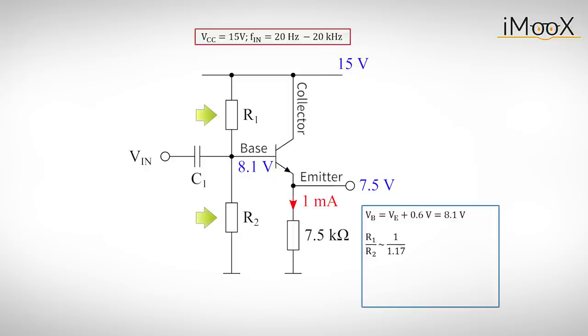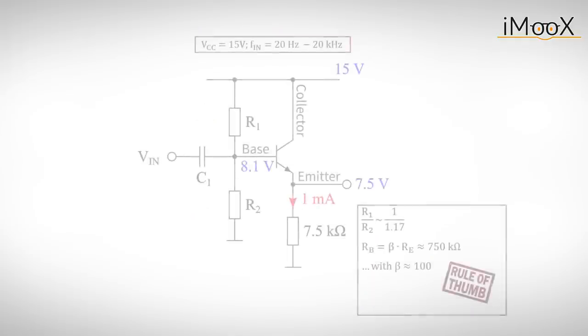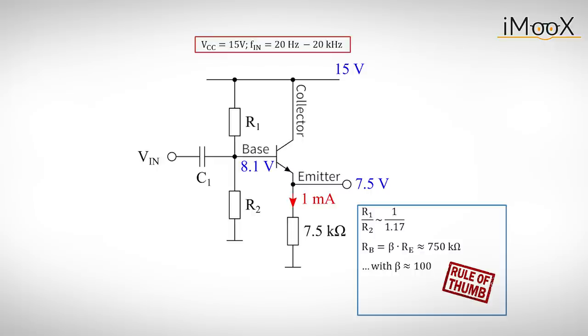Now what about the voltage divider? On the one hand, the divider must provide 8.1 volts at the base, so the ratio R1 to R2 must be 1 to 1.17. On the other hand, we want the input impedance to be large compared to the output impedance. We already know that the impedance looking into the base is approximately beta times the resistance at the emitter, or 750k, estimated with our first rule of thumb.